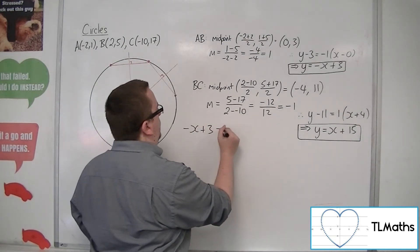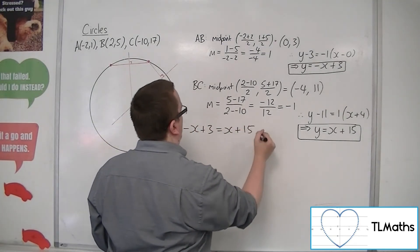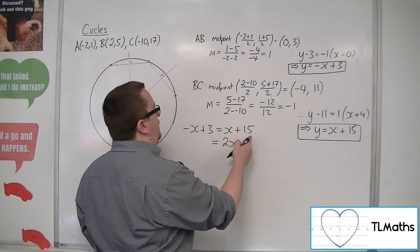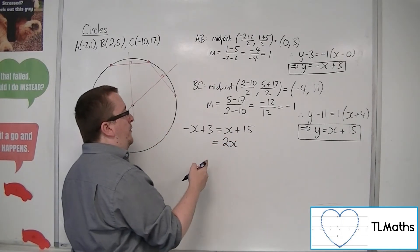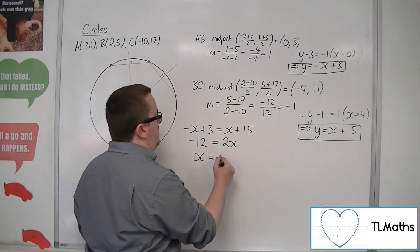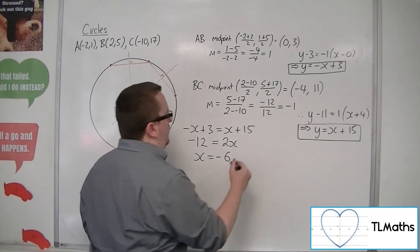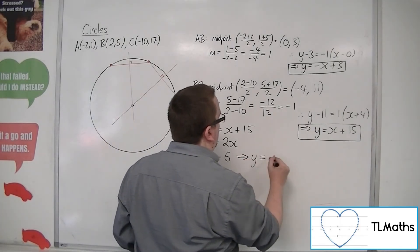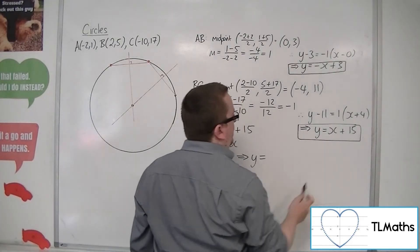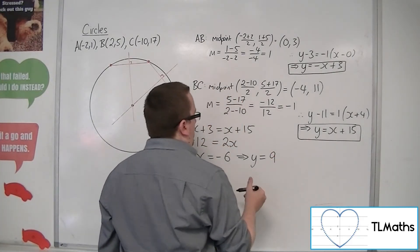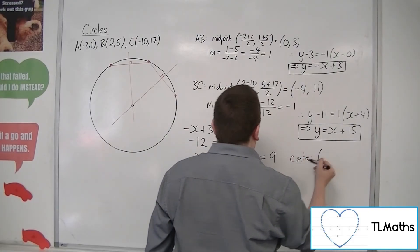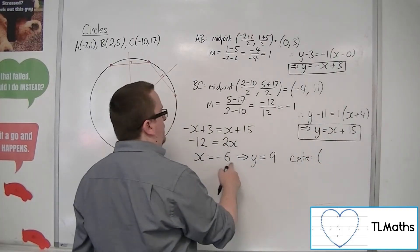Setting the two equations equal to each other: adding x to both sides gives 2x, then subtracting 15 from both sides gives minus 12, so x equals minus 6. Substituting that into one of the equations: minus 6 plus 15 is 9. So we know that the centre of this circle is at (minus 6, 9).